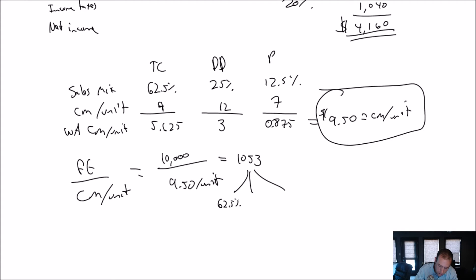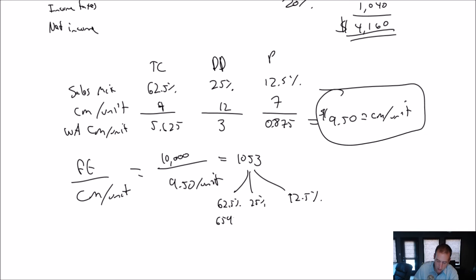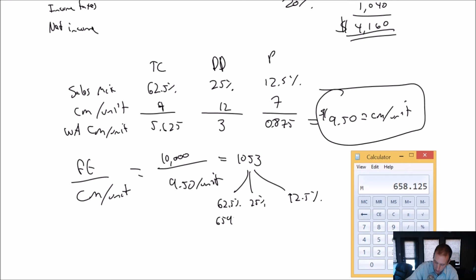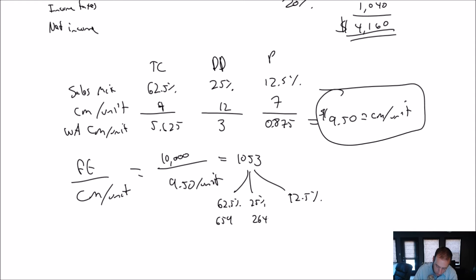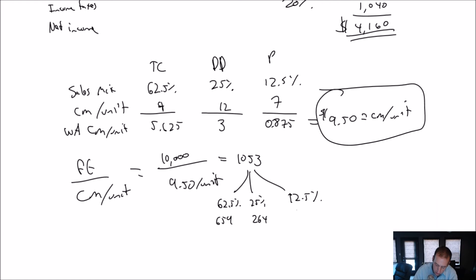But let's break it down. What would we expect these units to be made up? Well, 62.5% are going to be thin crust, 25% deep dish, and 12.5% will be pasta dishes. So, 1,053 times 0.625 is 659 thin crust pizzas need to be sold. 1,053 times 0.25, 264 deep dish pizzas need to be sold. And 1,053 times 0.125, 132 pasta bowls need to be sold. So, that was thin crust, deep dish, and pasta. That's what we need to sell in order to break even.